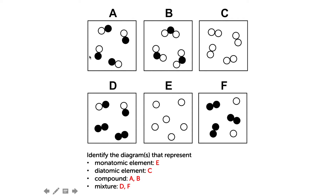Let's check our answers. A monoatomic element is example E because there is only one type of atom and each is singular. In C, this is a diatomic element because there is only one type and in each molecule there are two of them joined together. For box A, in each molecule there is one white and one black circle representing different elements, so they combine to form a compound.